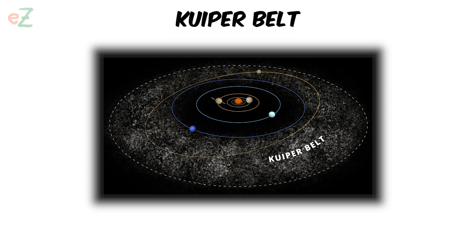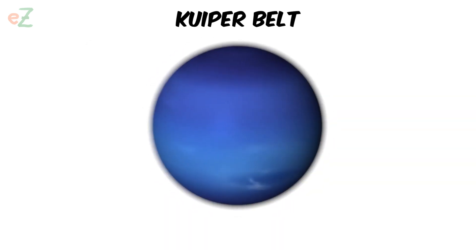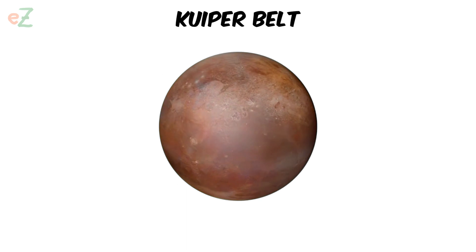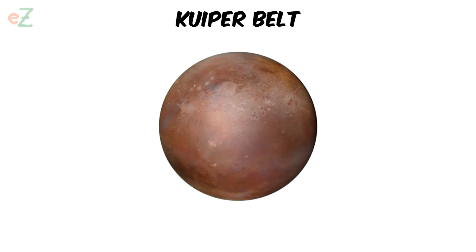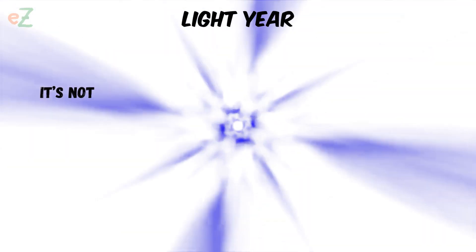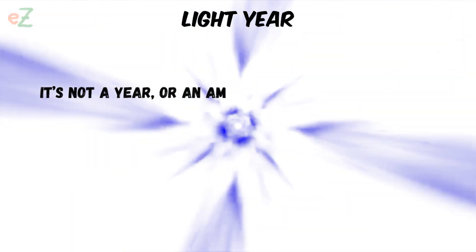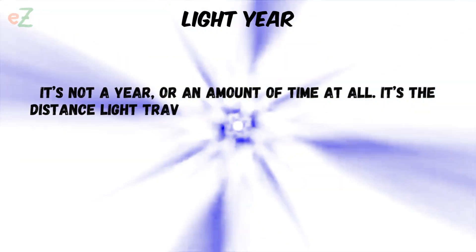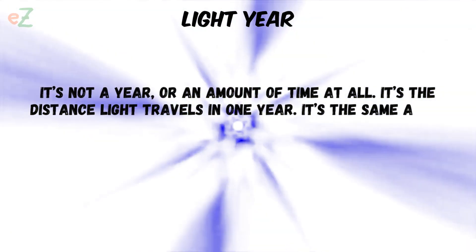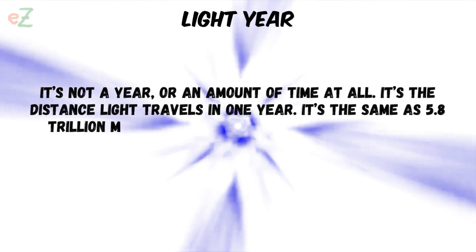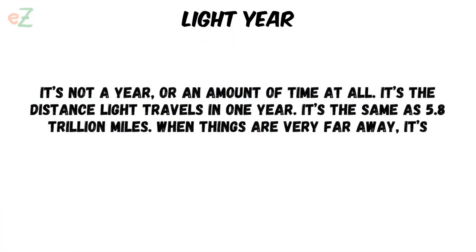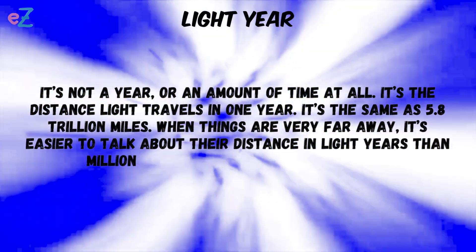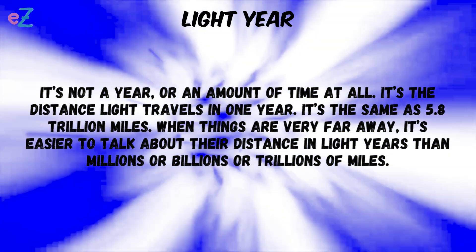Kuiper belt. A donut-shaped ring of icy objects beyond the orbit of Neptune. Pluto is the best known of these icy worlds. Light year. It's not a year or an amount of time at all. It's the distance light travels in one year — the same as 5.8 trillion miles. When things are very far away, it's easier to talk about their distance in light years than millions or billions or trillions of miles.